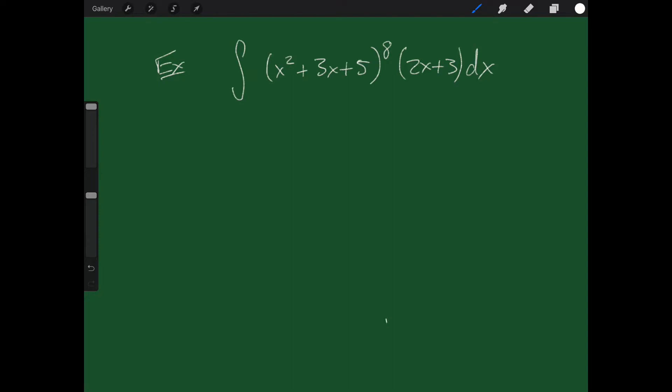So for example, look at x² + 3x + 5. Its derivative shows up in this problem. What is its derivative? It's 2x + 3. So what I'm going to do is I'm going to make a u substitution for the x² + 3x + 5.